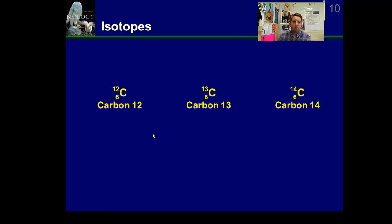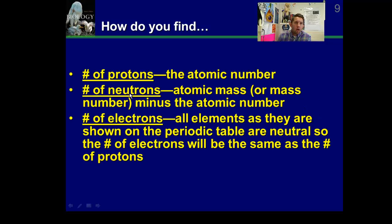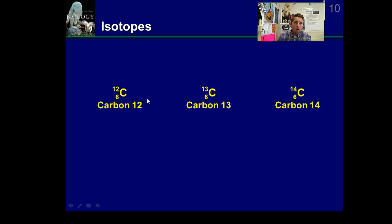Isotopes. The reason I told you how we find neutrons is because there are forms of different elements, carbon is one example, that differ in their number of neutrons. Here's our regular form, our general form of carbon, carbon-12. 6 protons, 12 minus 6, 6 neutrons. This is as it exists normally.